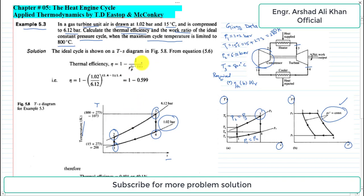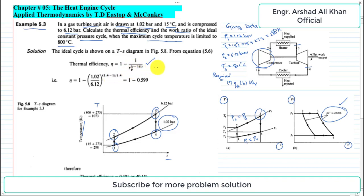From chapter 5, the expression for thermal efficiency of the ideal constant pressure cycle is developed. Thermal efficiency equals 1 minus 1 over the pressure ratio to the power (gamma minus 1) divided by gamma, where gamma is the adiabatic or isentropic index, which has a value of 1.4 for air.